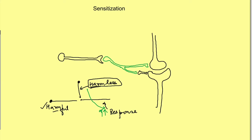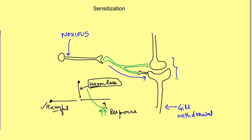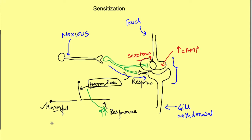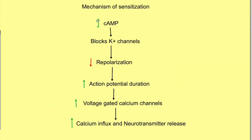The physiological basis of sensitization was also studied in Aplysia. When a noxious stimulus is given to the tail, the neuron from there connects via an interneuron to the motor neuron causing gill withdrawal. This interneuron also makes pre-synaptic contact with the touch sensory neuron seen in habituation. The interneuron releases the neurotransmitter serotonin, which acts pre-synaptically on the touch sensory neuron and increases intracellular cAMP in that neuron.